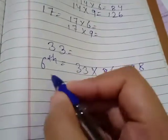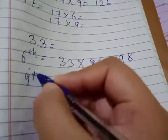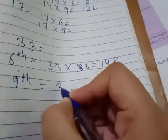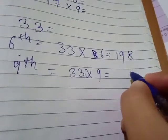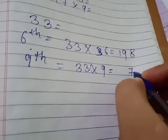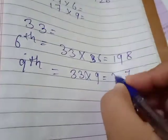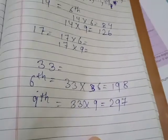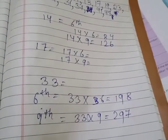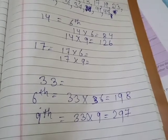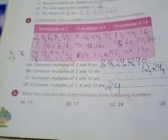Then ninth multiple, 33 times 9. So 9 threes are 27, 9 threes are 27 plus 2 is 29, so 297. Got it? Clear. So this is your 6th and 9th multiple of the given numbers: 14, 17, 33, and 24.